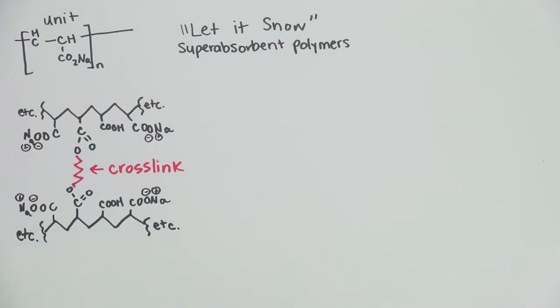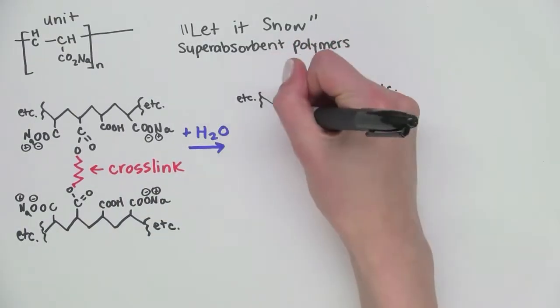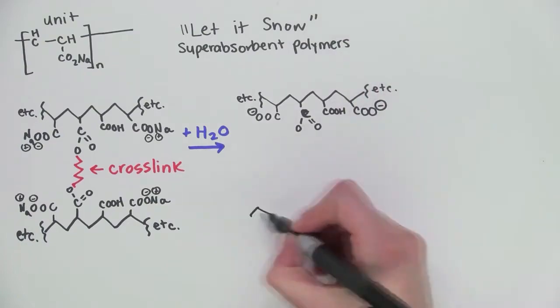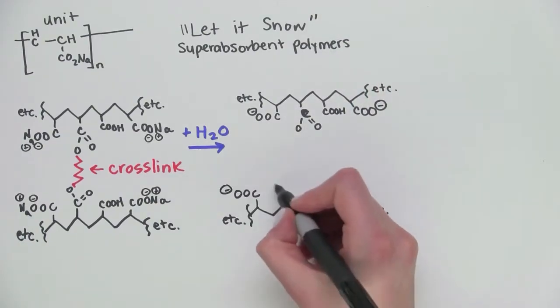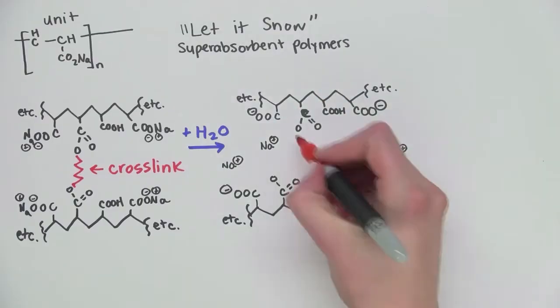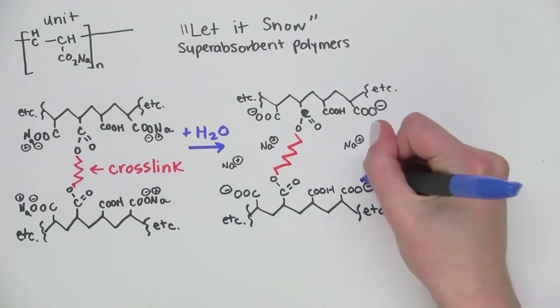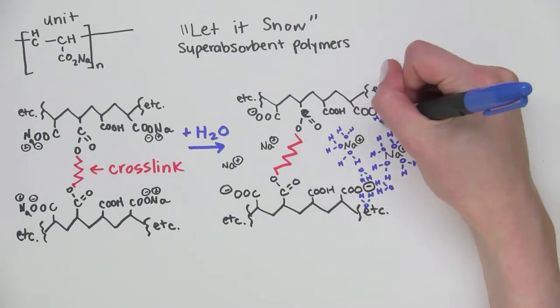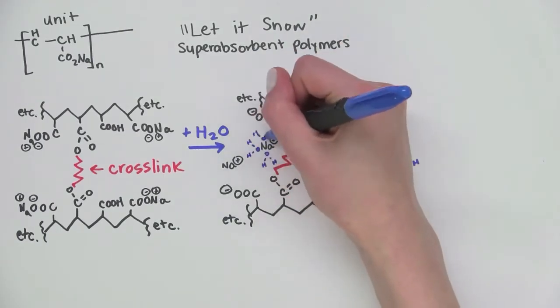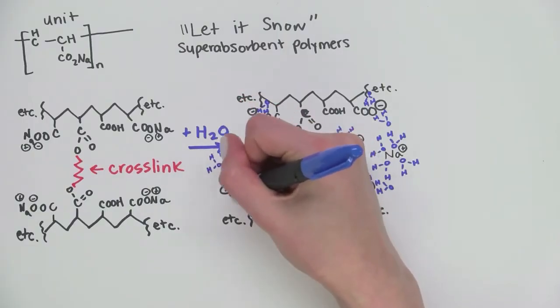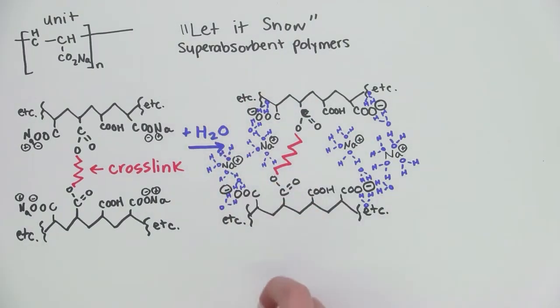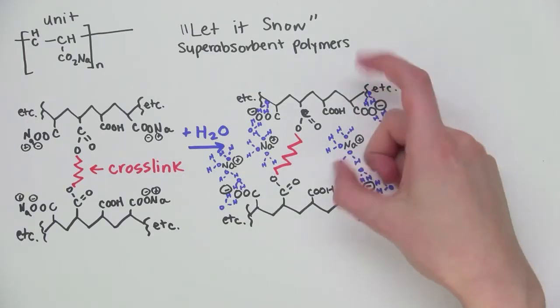Now, when water is added to the polymer, it wants to rush into the material because of the presence of so many sodium and carbon carboxylate ions. The water displaces the sodium ions, leaving negatively charged carboxylate ions. These repel each other.